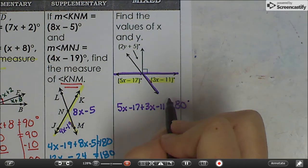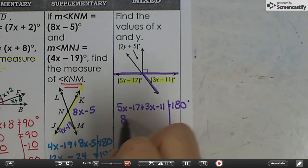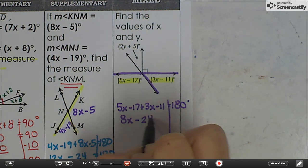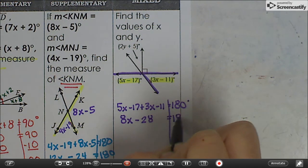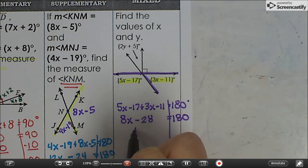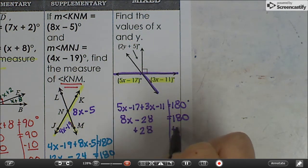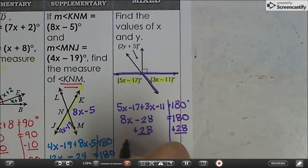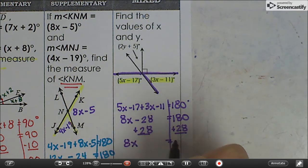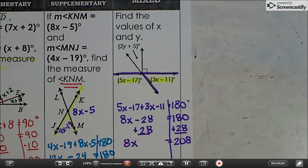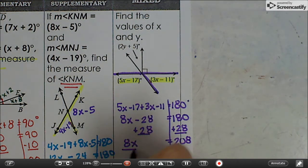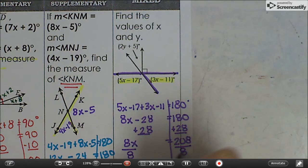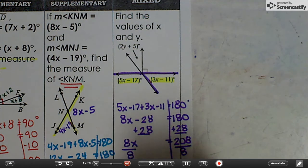Combine like terms. That's 8x minus 28 equals 180. Add 28 to both sides: 8x equals 208. Divide both sides by 8: x equals 26.